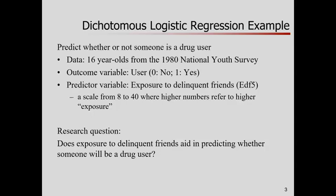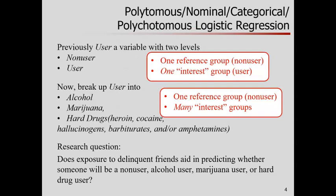Hopefully you might think about tackling this as a logistic regression, the kind that we've just been talking about. So let's change it up a little bit. Previously, I would think about drug user as a variable with two levels — user or non-user. Now, if I want to do a finer-grained analysis, let me break up the user category into finer-grained distinctions.